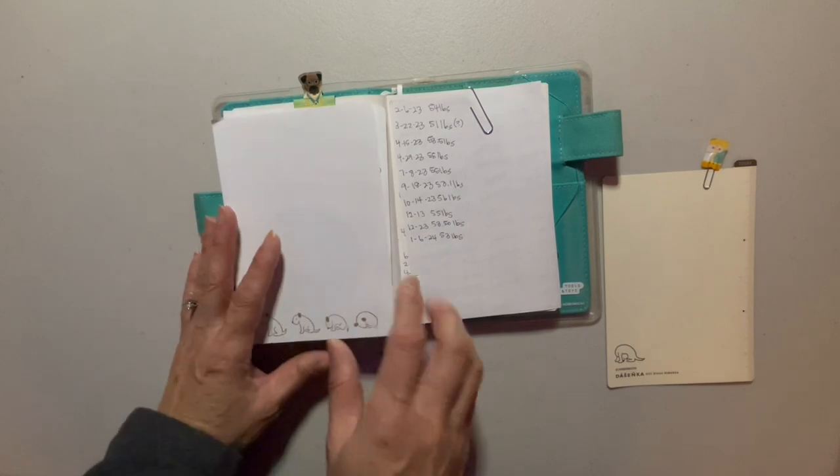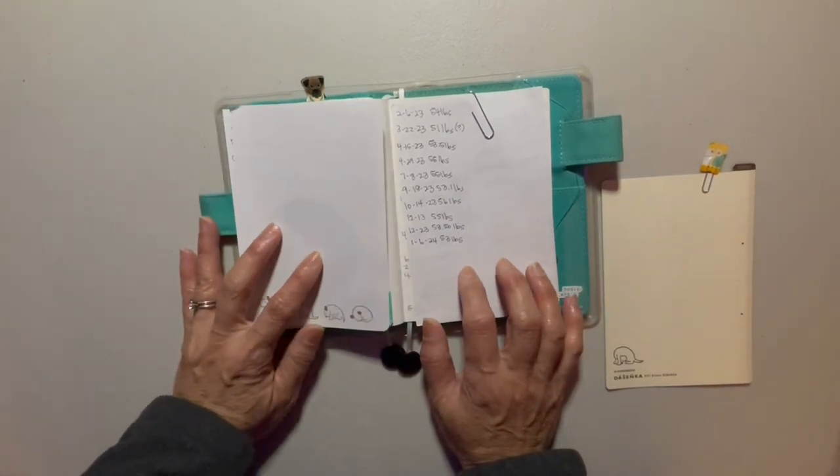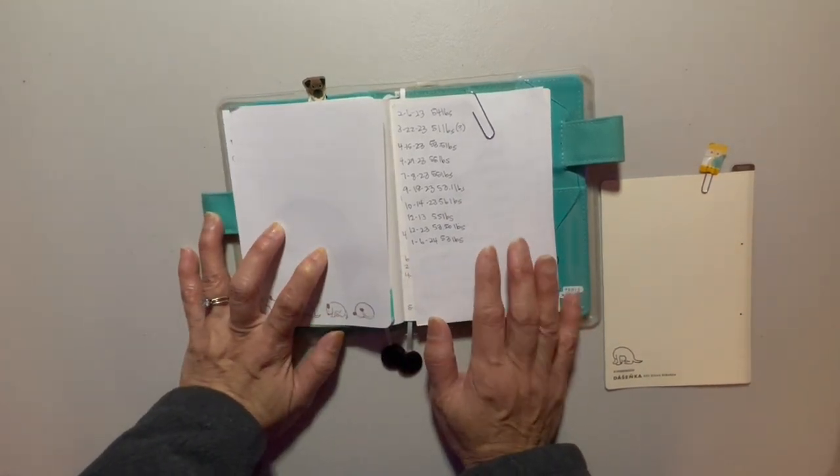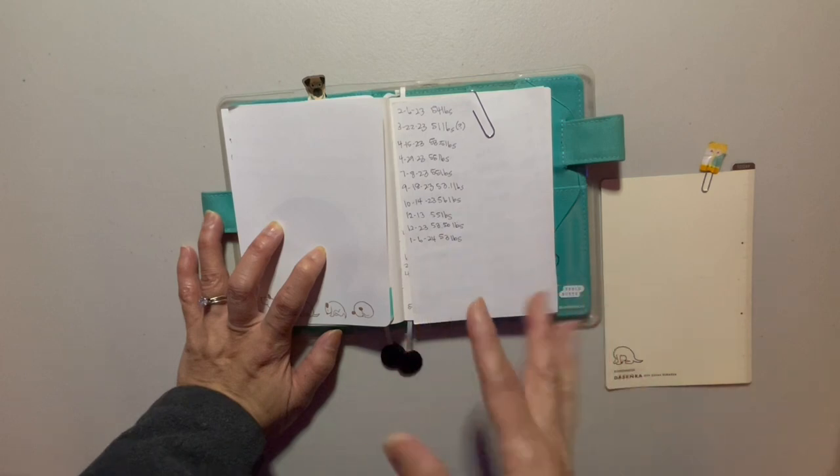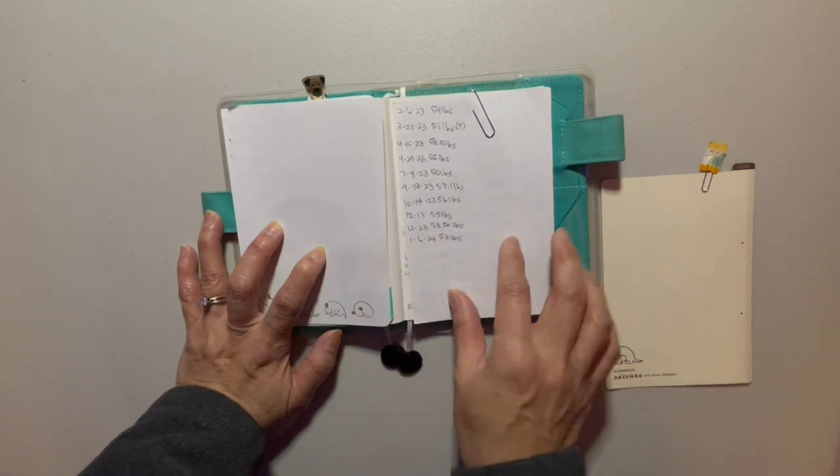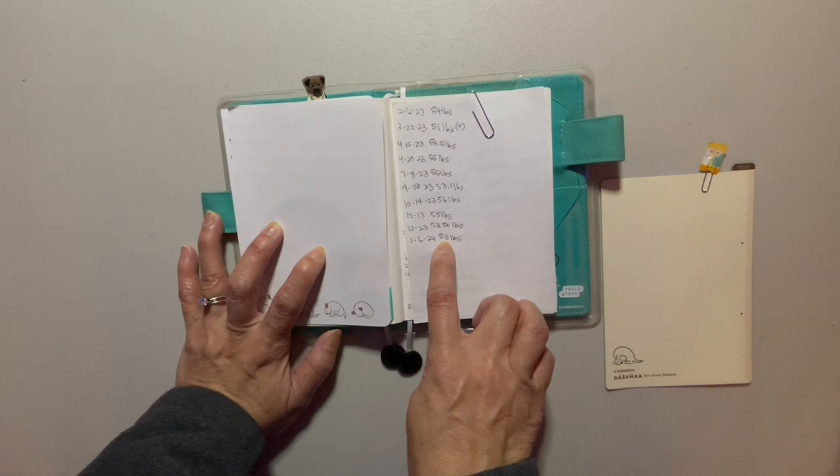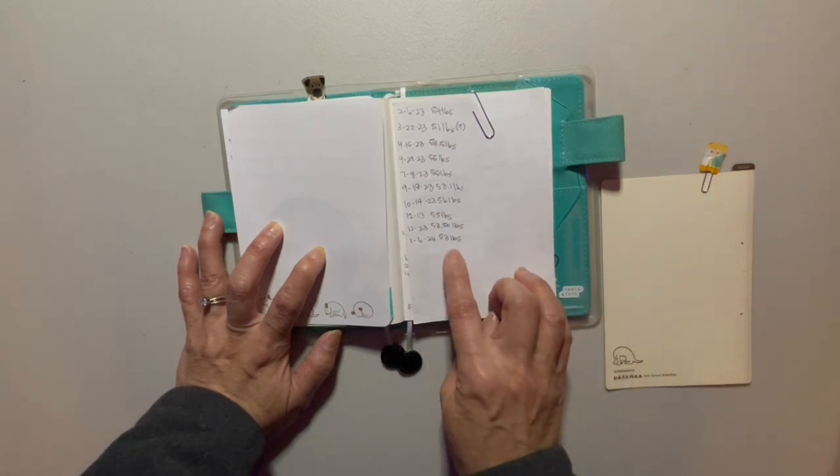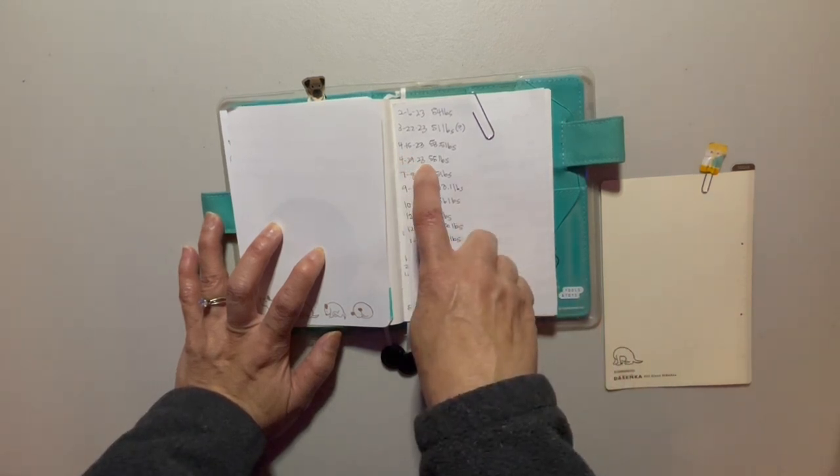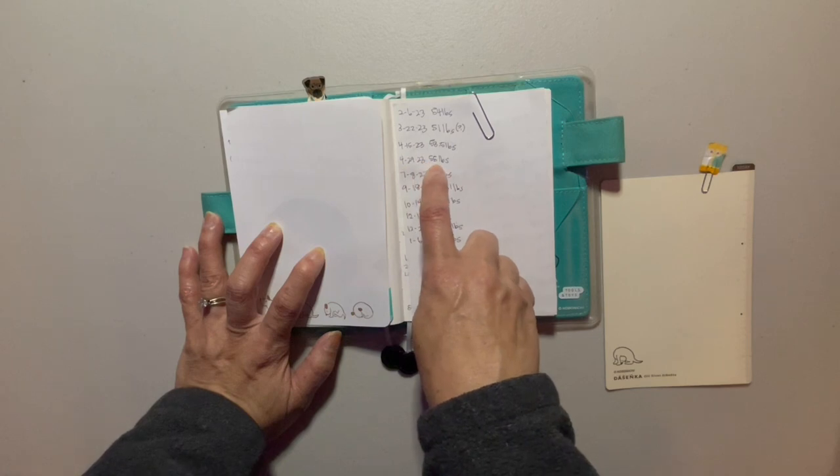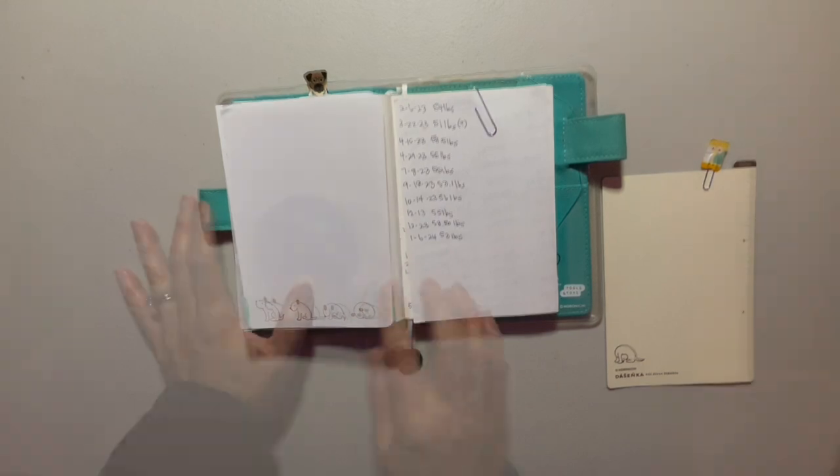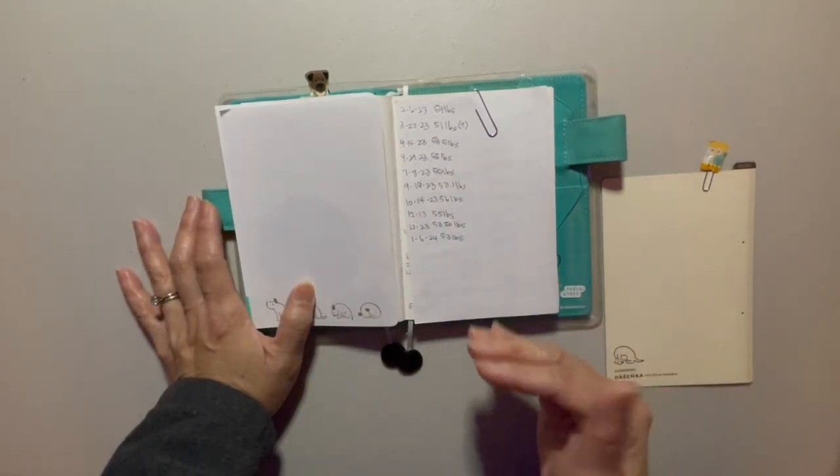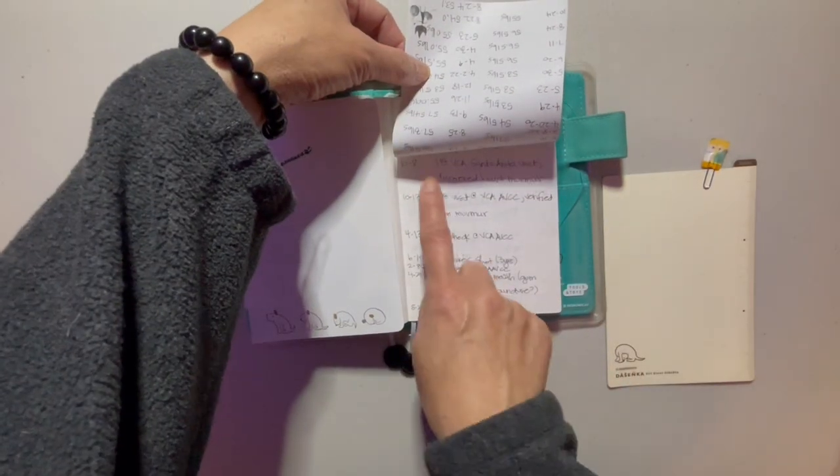And then this is an extra sheet. I've been keeping track of Bruce's weight. I've been trying to keep him because of his heart. I can't let him get heavy. And so I've been trying to keep him like in the 50-ish range. And so you can see like right now he's at 53 pounds, which I think is pretty good. The vet is happy with that. At one point last year, so in April, he was 55 pounds. The heavier he is, the harder his heart's going to work.